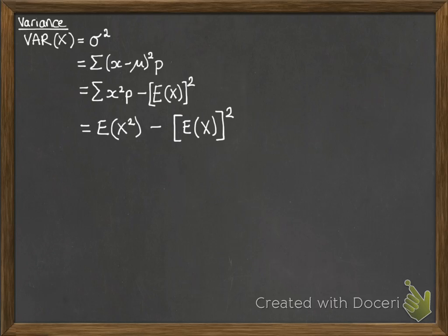And what I'll be using most often is this form. So that sum of x squared times p, that's the same as if you did the expected value of x squared. So for e of x, you do x times p. So for e of x squared, you do x squared times p.